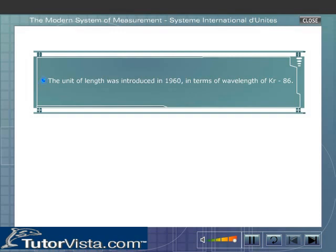With scientific development taking place, time to time better and improved units of length were introduced. In 1960, the unit was defined in terms of wavelength of Krypton-86.